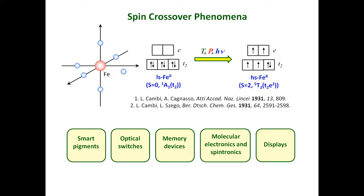Today, scientists are looking for complexes with stronger effects of spin crossover. They are increasing the number of metal ions participating in the spin crossover, and this allows obtaining two interesting effects: it increases the temperature of the spin transition and increases the difference between the magnetic susceptibility values at low and high temperatures.